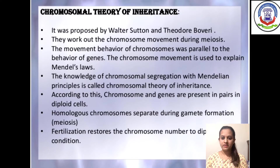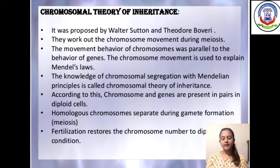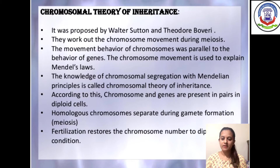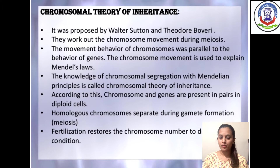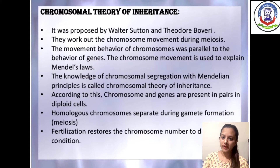Our next topic is the chromosomal theory of inheritance. This theory was proposed by Walter Sutton and Theodore Boveri. They studied chromosomal movement during meiosis — a type of cell division that occurs during gamete formation. During gamete formation, the number of chromosomes becomes half that of the parent. They observed that the behavior and movement of chromosomes and genes were parallel in the nucleus, and combining this with Mendelian law of segregation, they gave the chromosomal theory of inheritance.